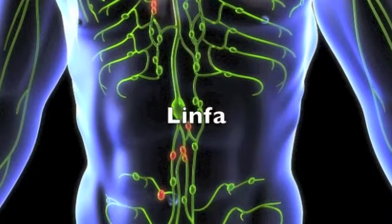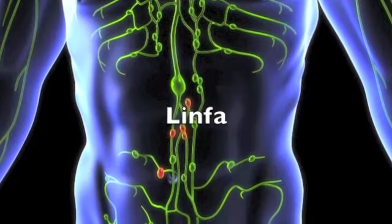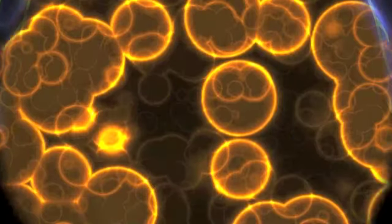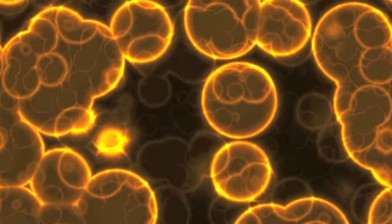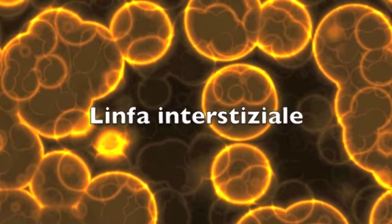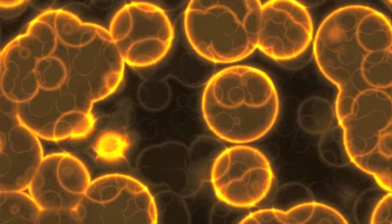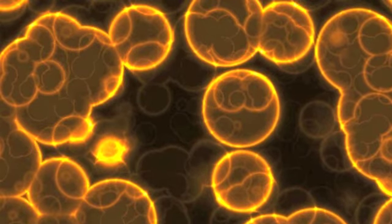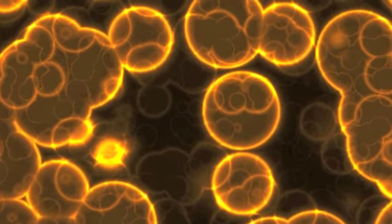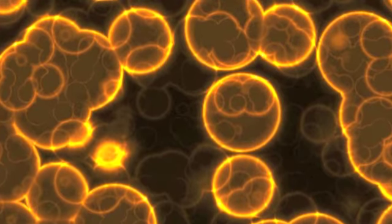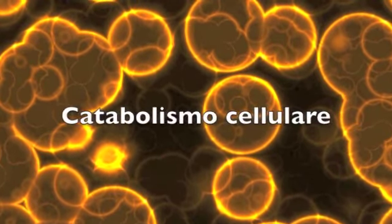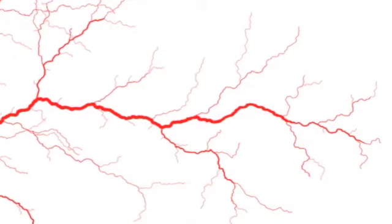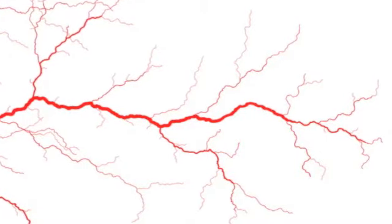These structures transport the lymph, which is an alkaline and colorless fluid. It has two functions: first, to wet the spaces between cells — this is called interstitial lymph, a part of the plasma that has leaked out of the blood vessels. Second, to collect the waste of the cells, the waste of catabolism.